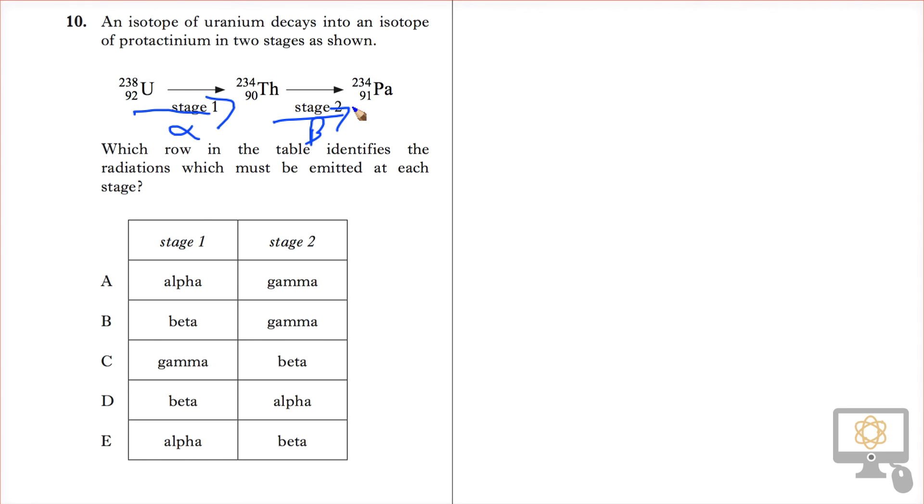A rise by one because in the nucleus of the atom, a neutron changes into a proton and an electron. The beta particle is emitted.